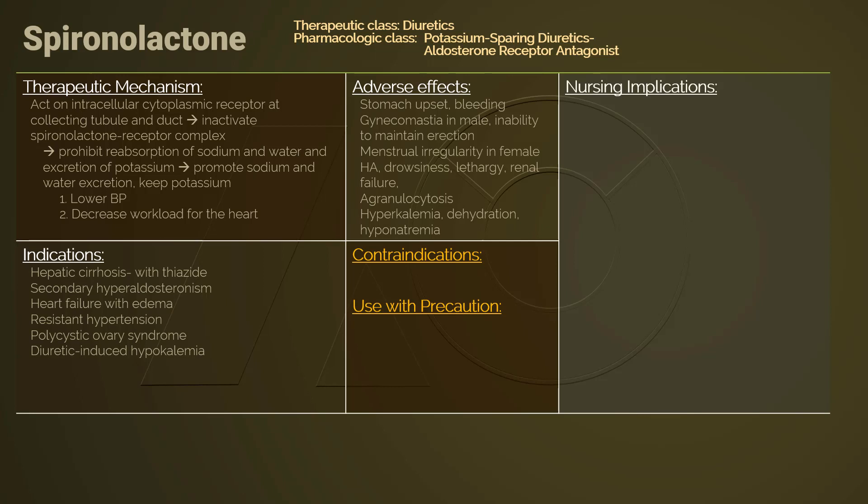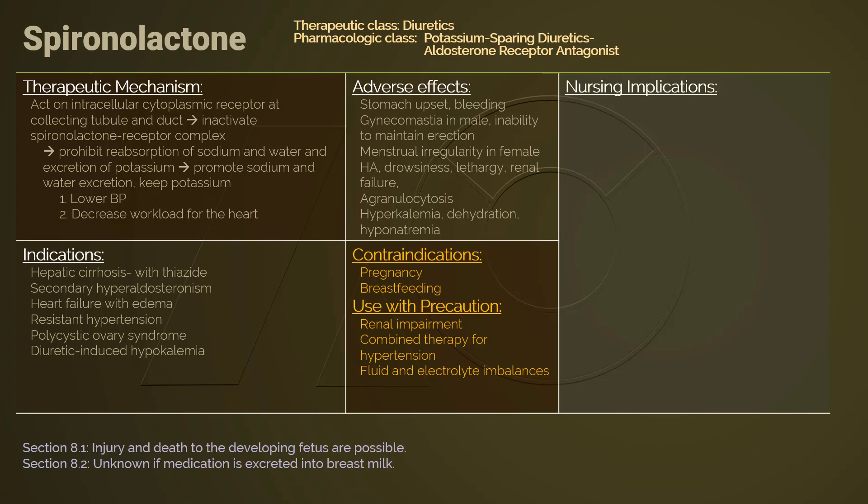Medication that works on the RAS should not be used during pregnancy or breastfeeding. Spironolactone targets the distal and collecting tubules of the nephron. Therefore, use spironolactone with caution in patients who have renal impairment and/or fluid and electrolyte imbalances.